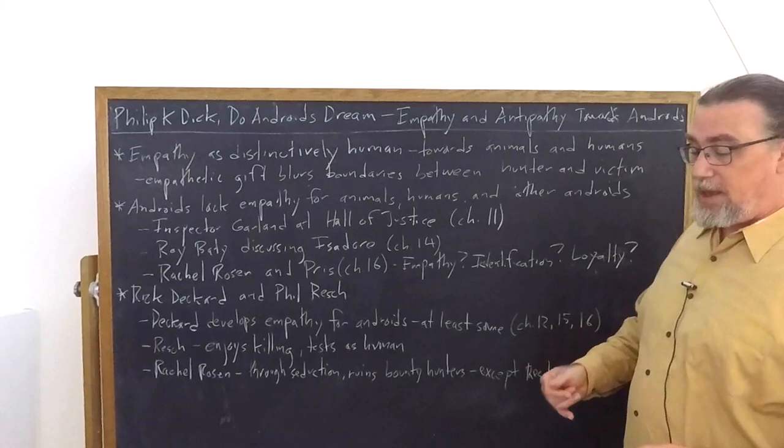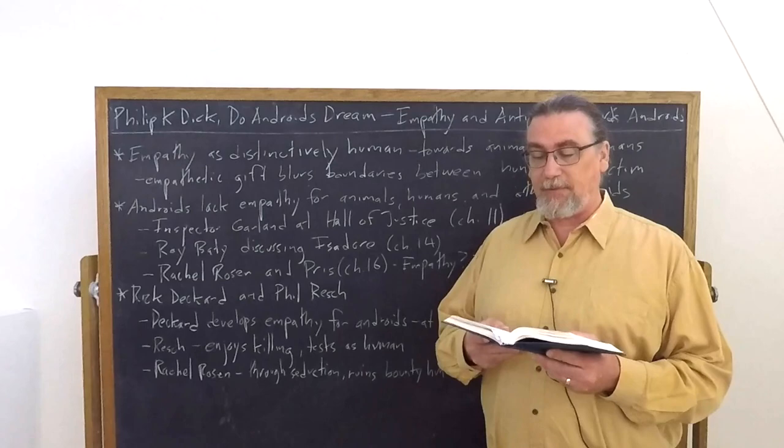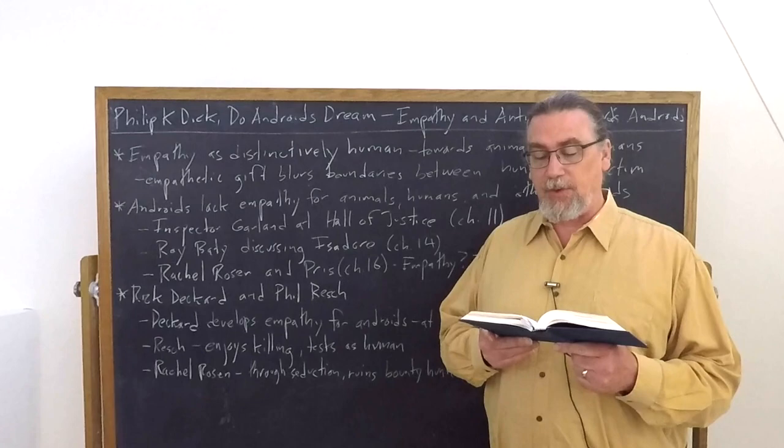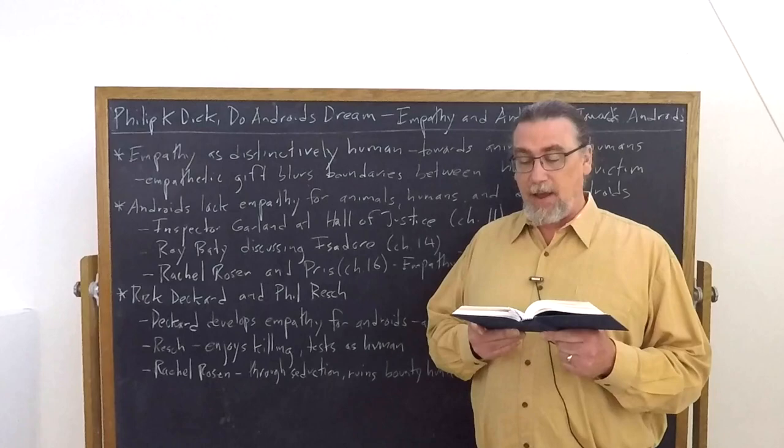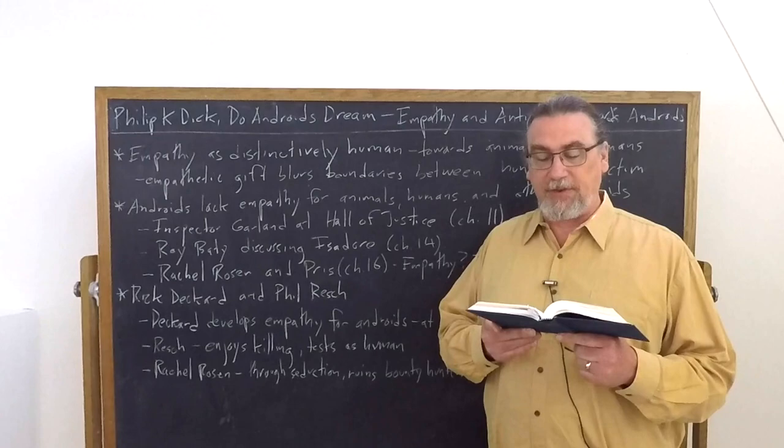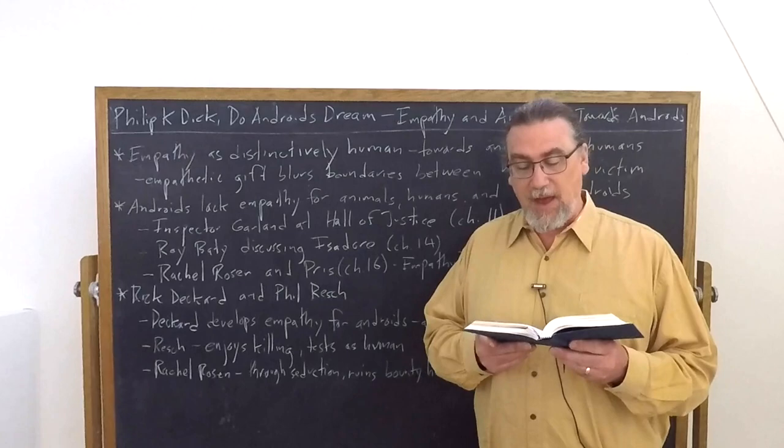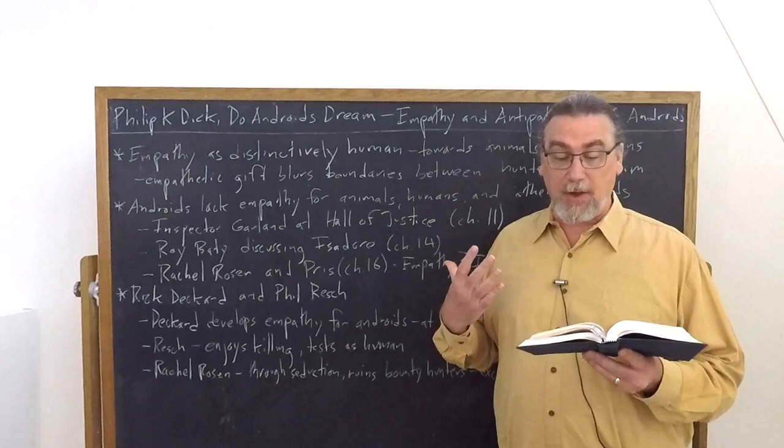Deckard suggests that empathy makes sense for human beings. He says empathy evidently existed only within the human community, whereas intelligence to some degree could be found throughout every phylum and order, including the arachnida, the spiders and things like that. But why? The empathetic faculty probably required an unimpaired group instinct. A solitary organism, such as a spider, would have no use for it. In fact, it would tend to abort a spider's ability to survive. It would make him conscious of the desire to live on the part of his prey. So predators would not have empathy, including highly developed mammals, such as cats.